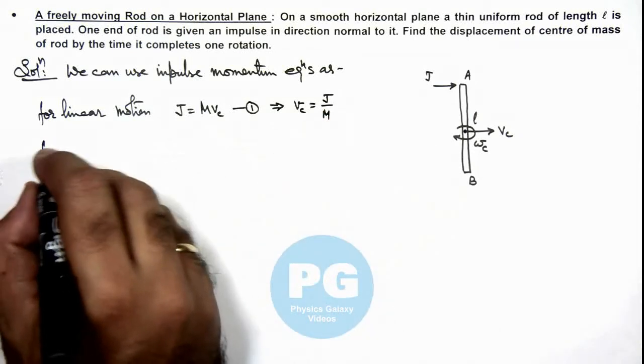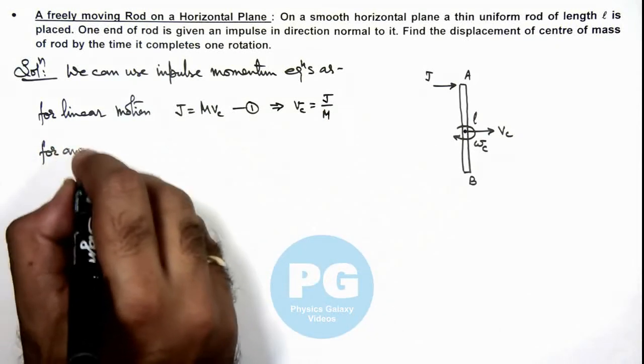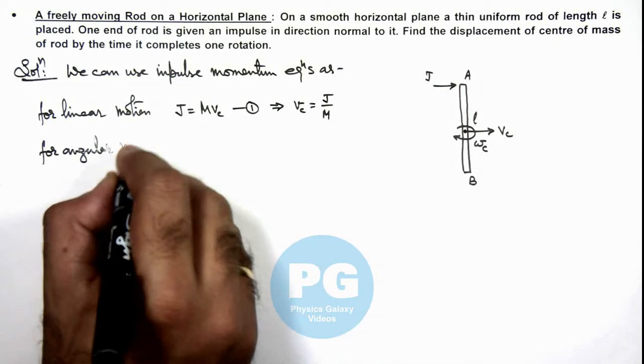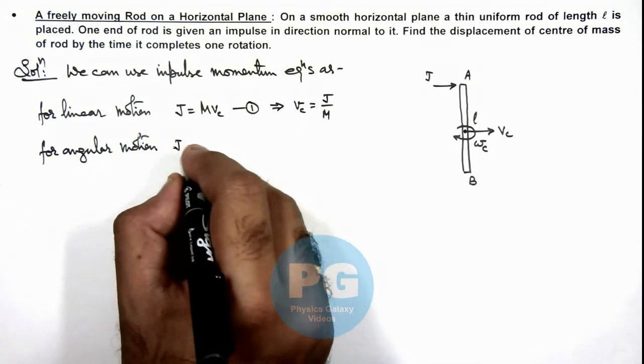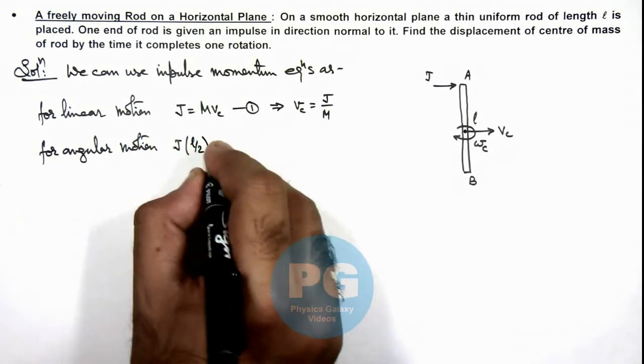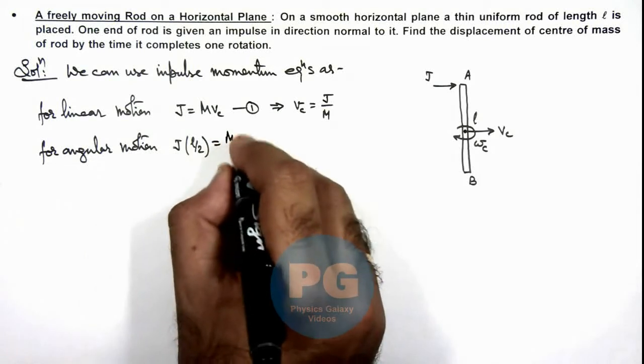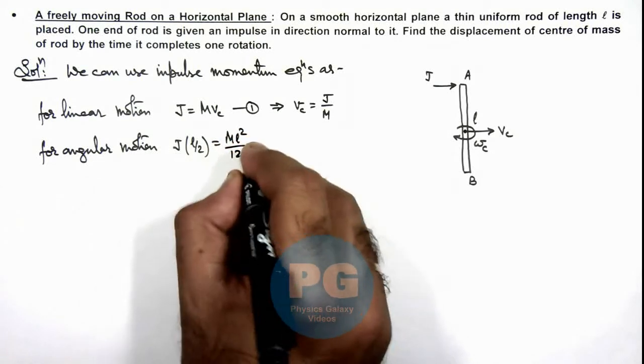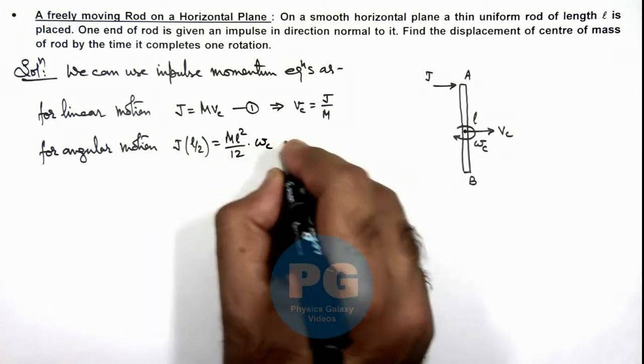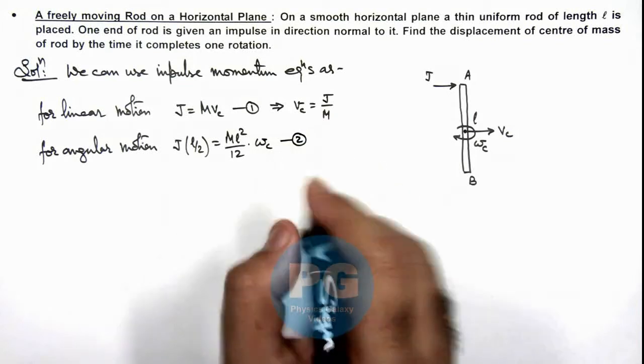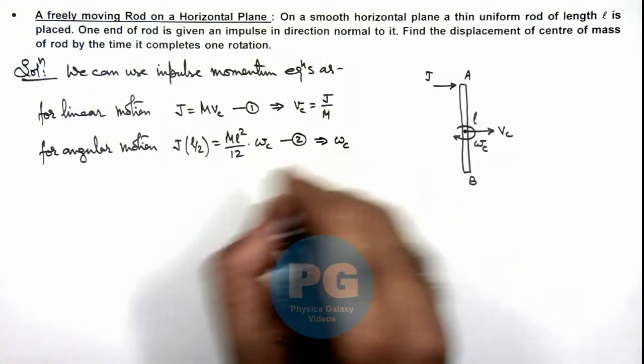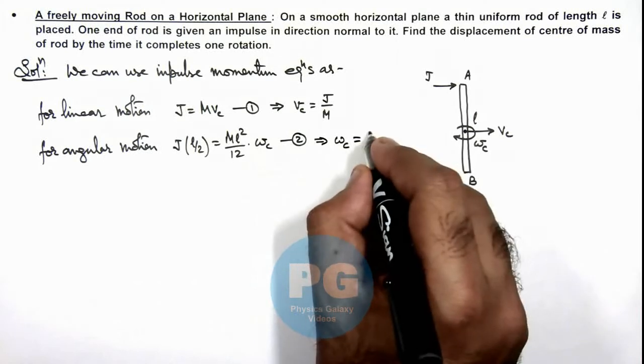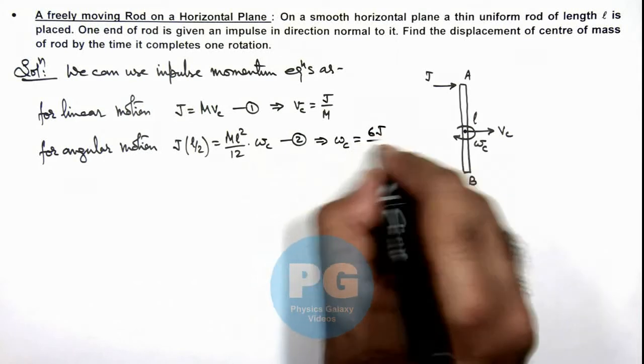And we can write for angular motion, the angular impulse imparted is j multiplied by l by 2, and that should be equal to m l square by 12 multiplied by omega_c. That is say here equation 2, which is giving us the value of omega_c, which we are getting as 6j upon ml.